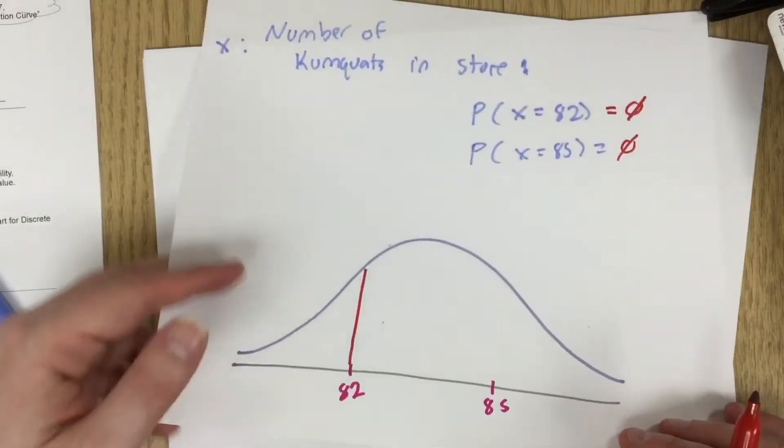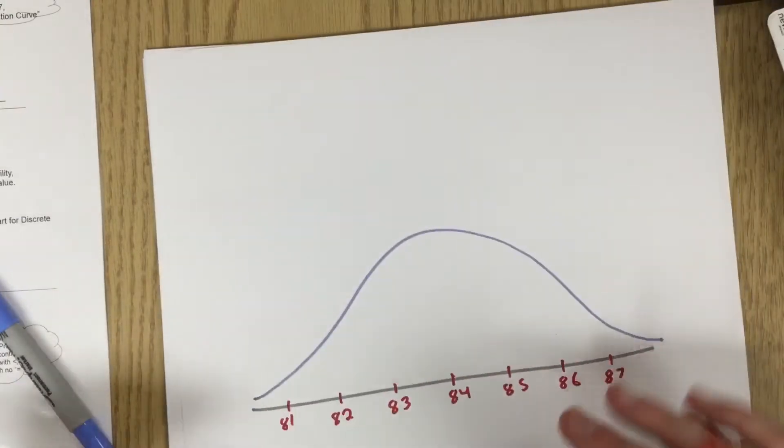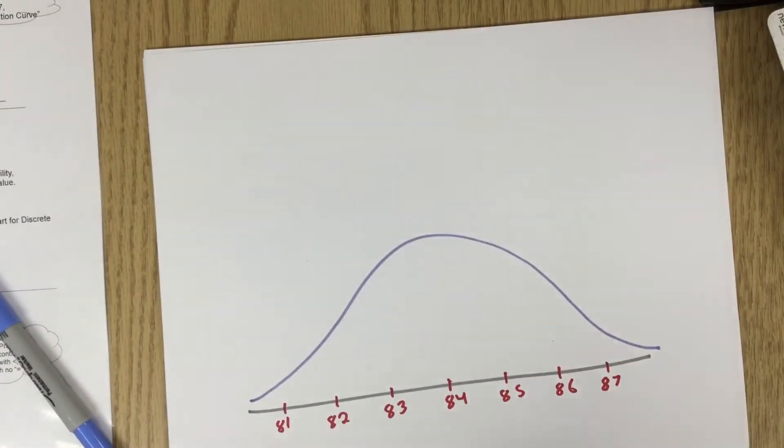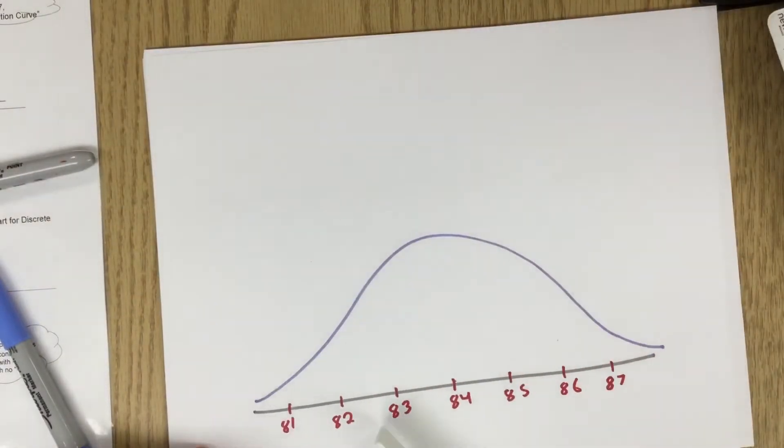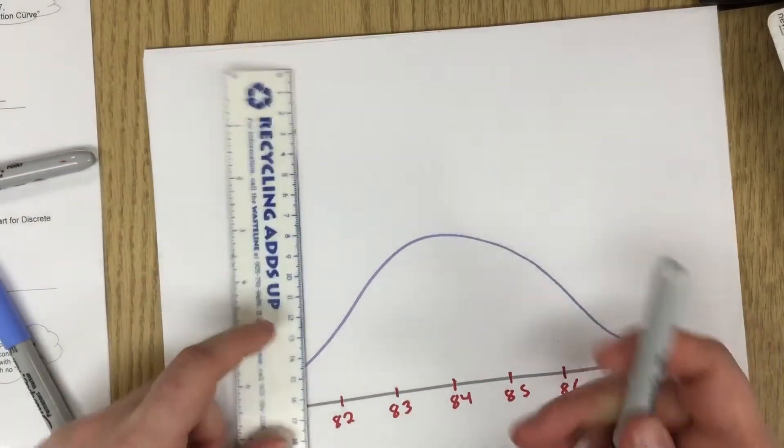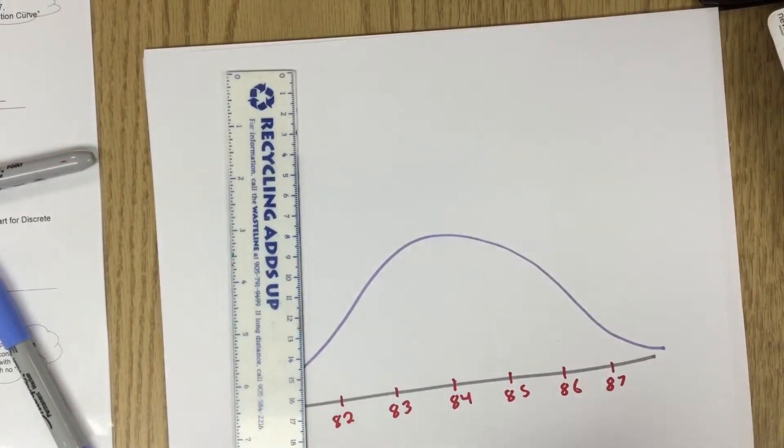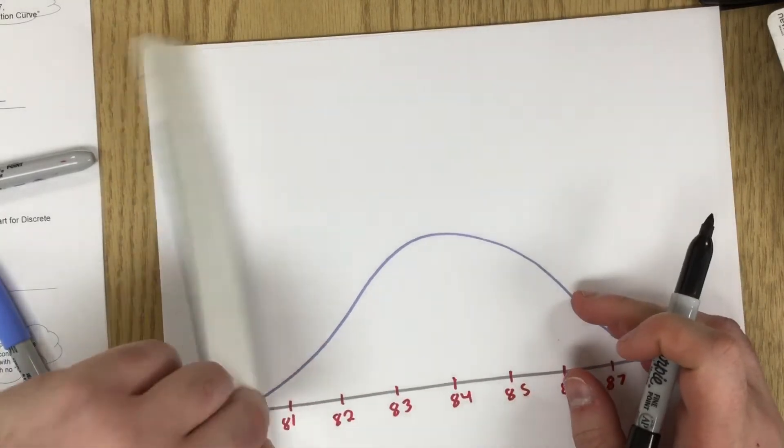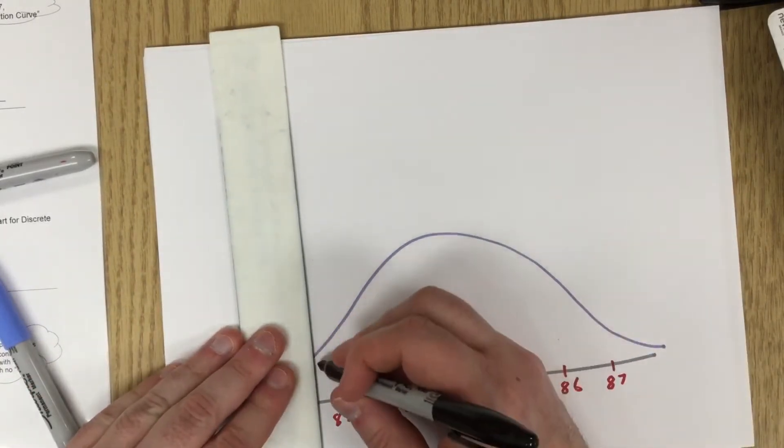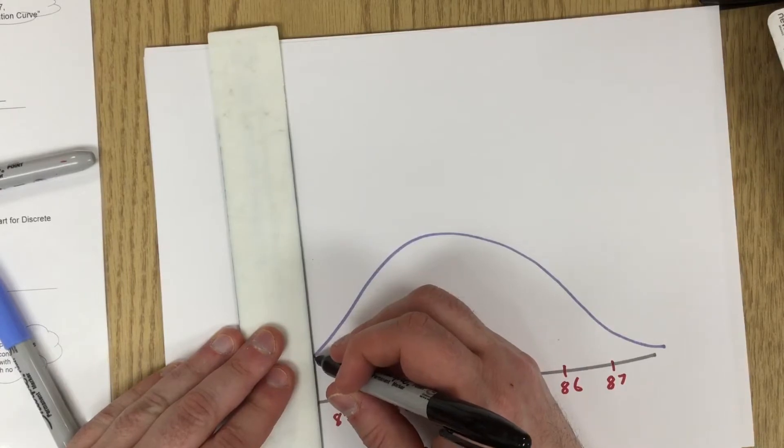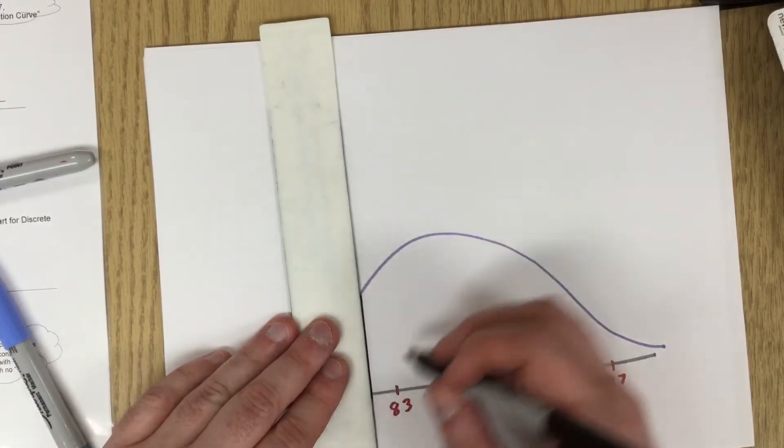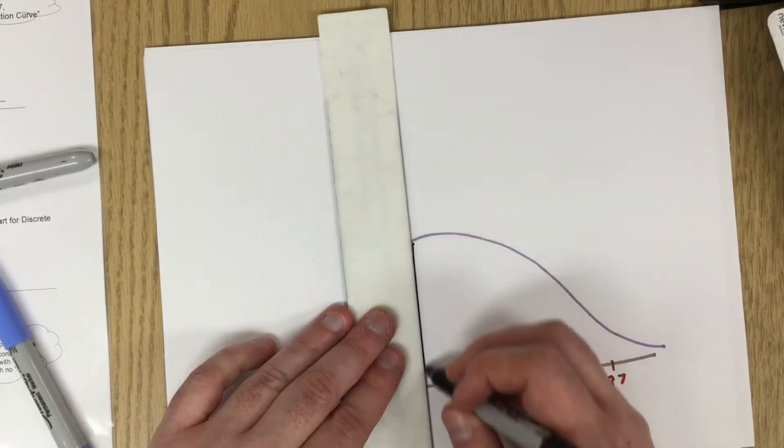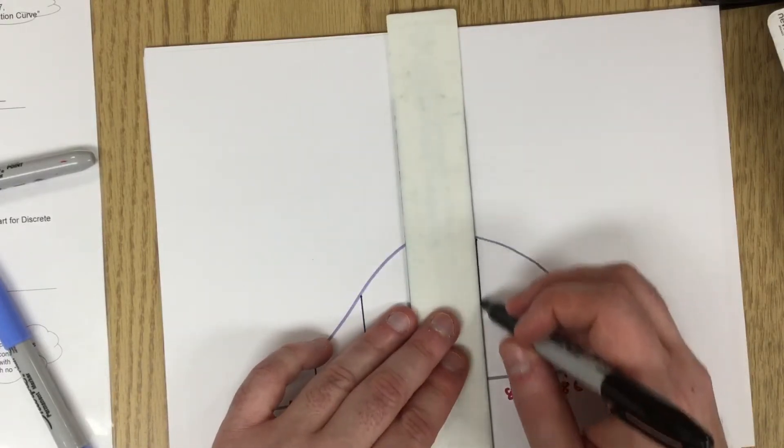So we're going to do a correction to make it work. So how are we going to do a correction? What we're going to do is we're going to take our probability distribution curve and we're going to divide it up into columns like that.